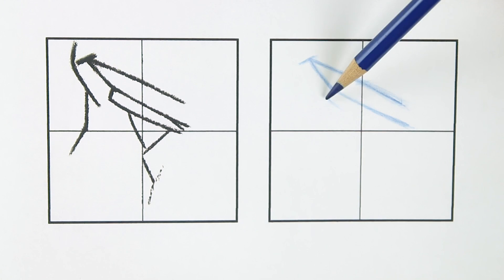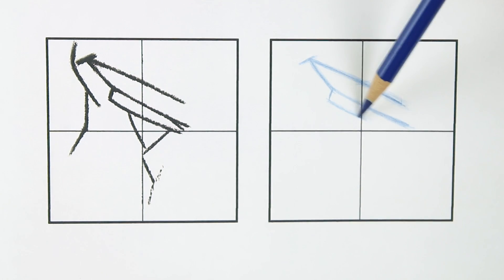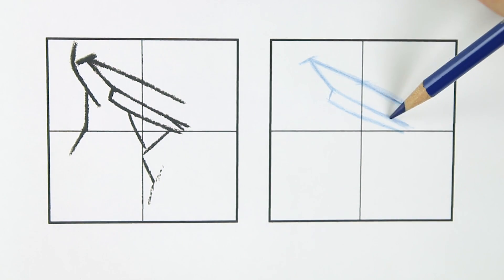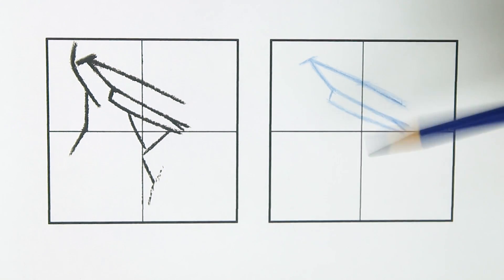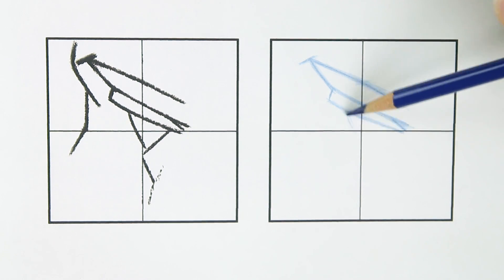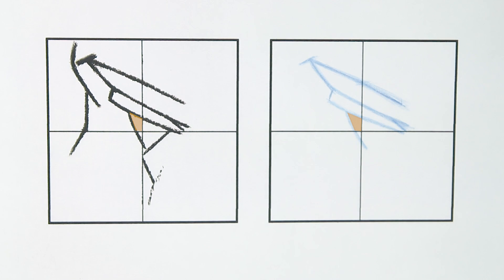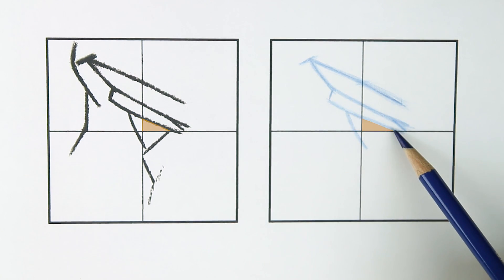We can use the same process for the next lines. As the drawing progresses, we have a lot more negative spaces that we can use. So we can compare these different shapes to make sure the drawing is accurate. Negative spaces are great because they combine both angles and distances into one element.